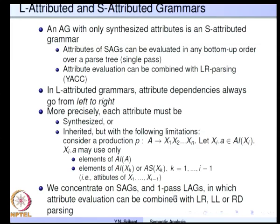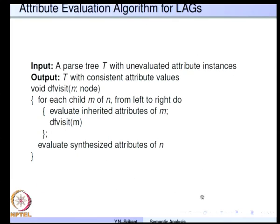If attribute evaluation can be done in one pass over the parse tree from left to right, it is called a 1-pass LAG (LAG 1). One-pass LAGs can be combined with LL or recursive descent parsers. SAGs can be handled with LR, LL, or recursive descent parsing. In general, if there are inherited attributes, LR parsing cannot be used for attribute evaluation without large restrictions.